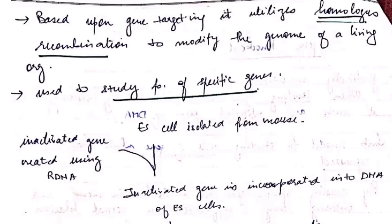This type of model can be used to create a mouse model of human genetic disease and can also be used to determine the functions of genes.